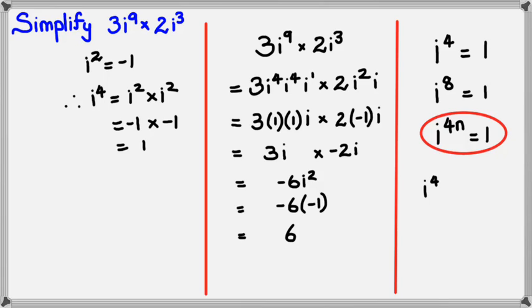Here we go. If I have i to the power of 41, I know that this could be written as—if I do 41 divided by 4, I'm going to get 10 times 4 plus 1. So this is going to be i to the power of 40 times i to the power of 1.